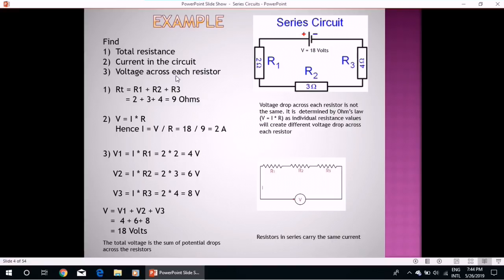Number three, voltage drop across each resistor. Again applying the same equation and by substituting the values of current which is same in the circuit and the corresponding value of resistor, we get the voltage drop across each component which is V1 is 4 volts, V2 is 6 volts, and V3 is 8 volts.